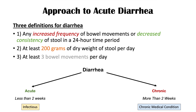However, categorizing diarrhea this way can have issues. Sometimes an infectious cause of diarrhea can last more than two weeks, making it technically chronic. And sometimes a medical condition like Crohn's disease can be just starting, presenting as acute diarrhea — the initial presentation of a chronic medical condition. So these categories aren't perfect, but this is what we usually work with.